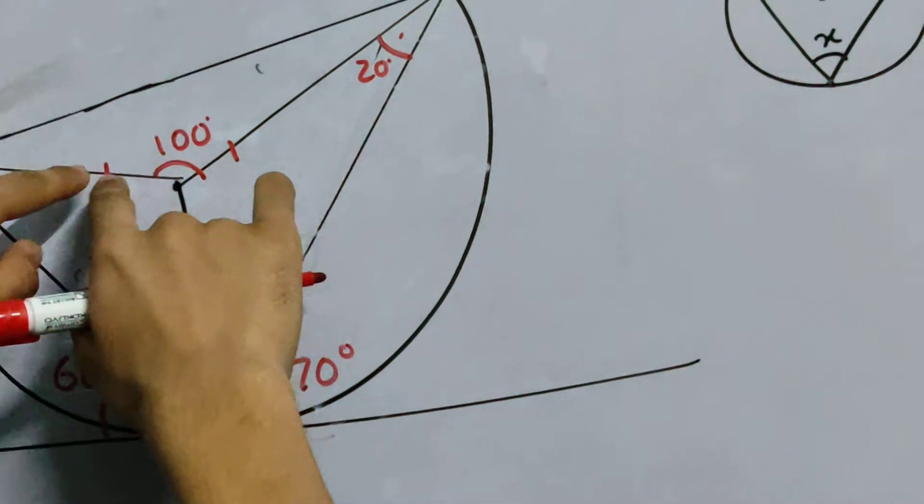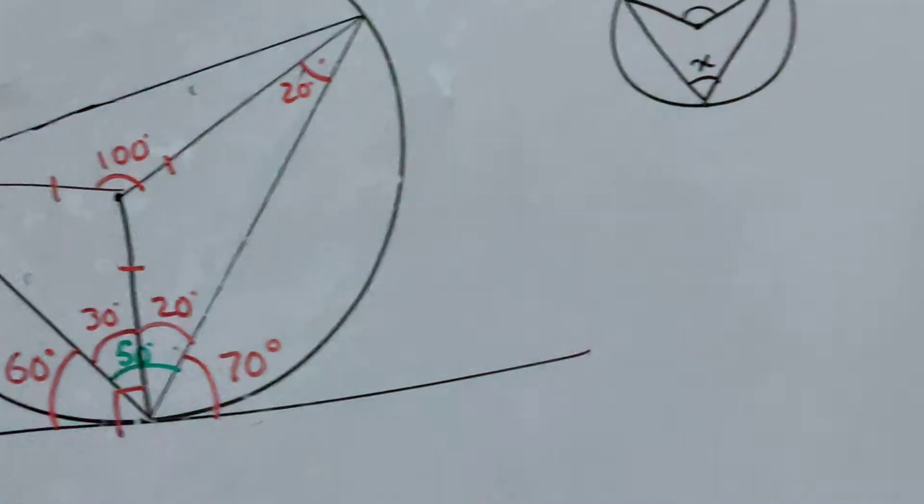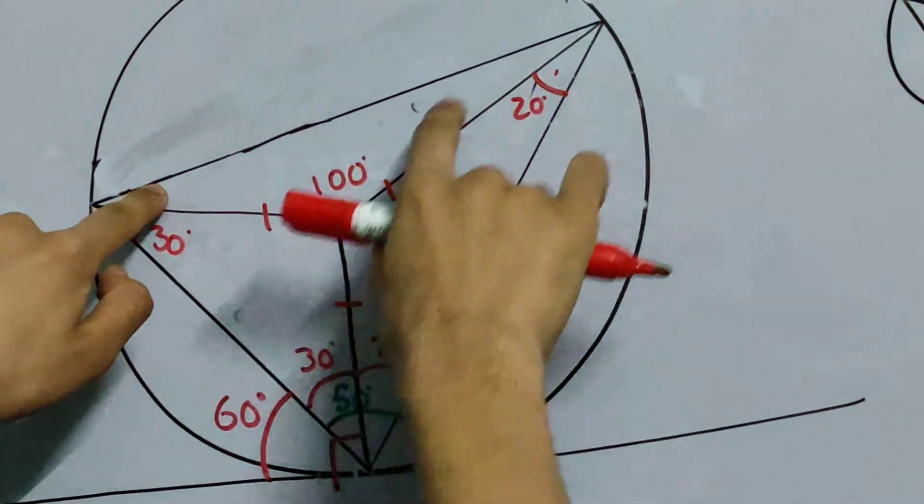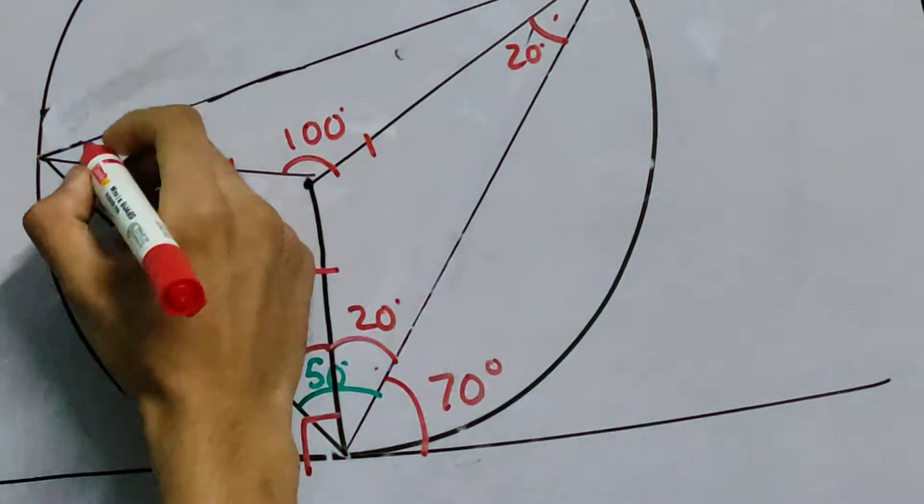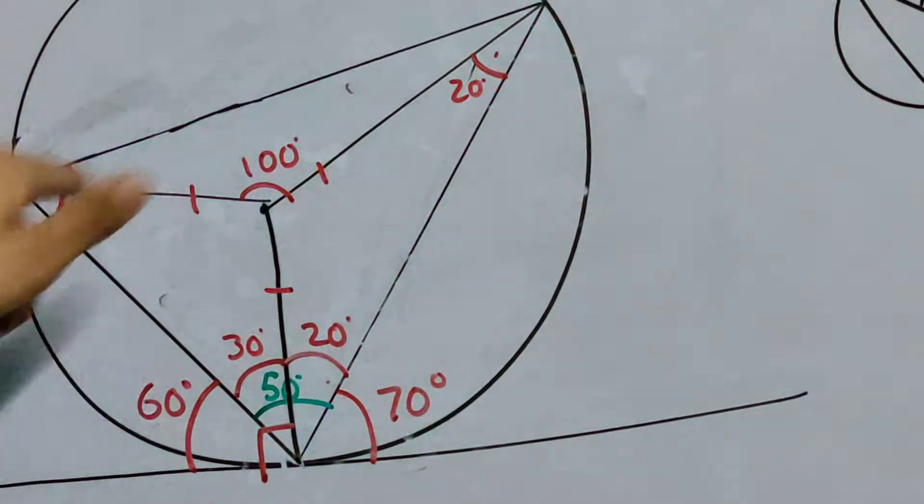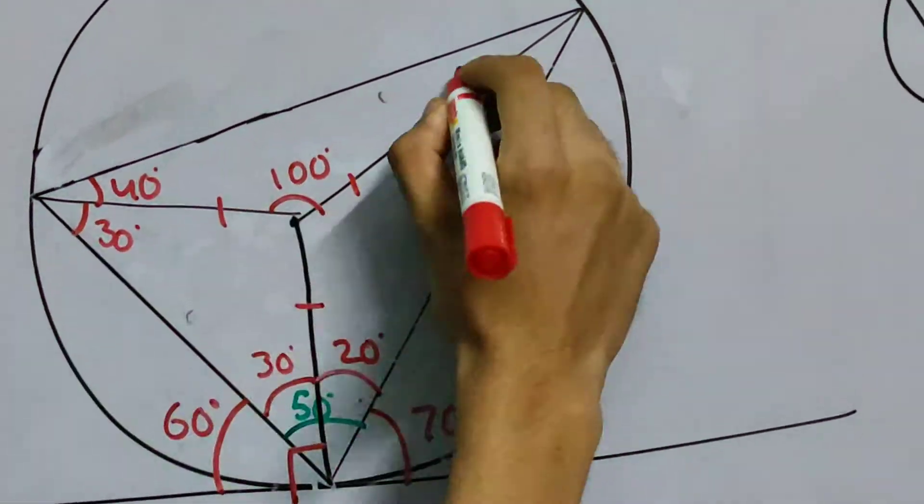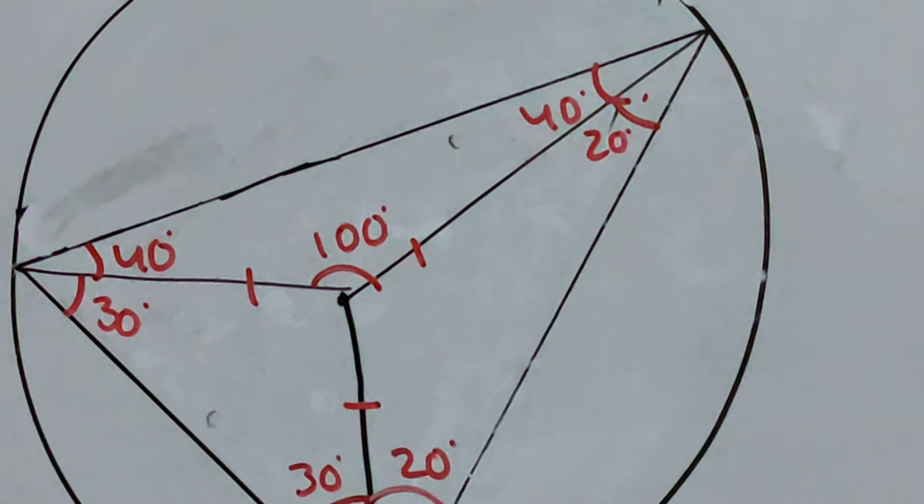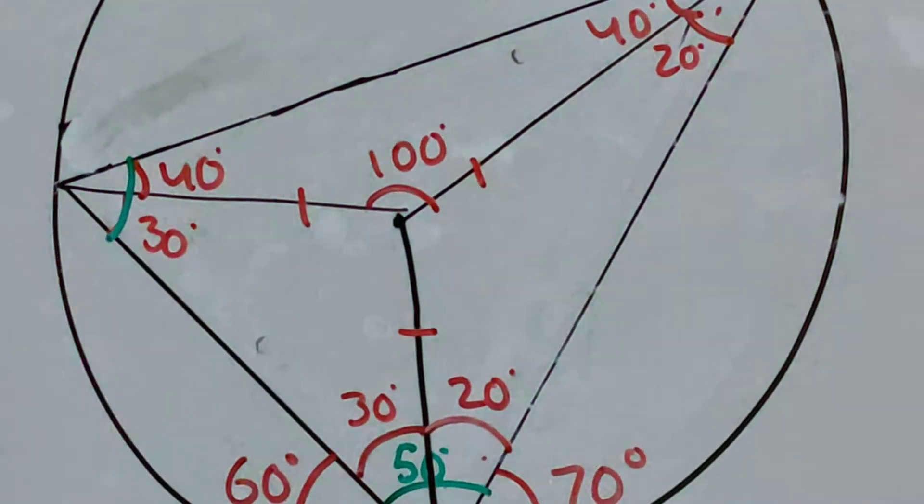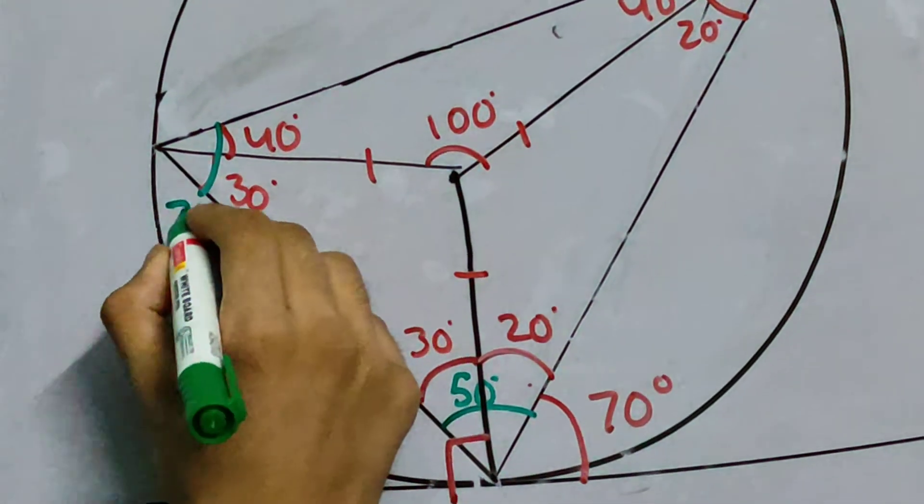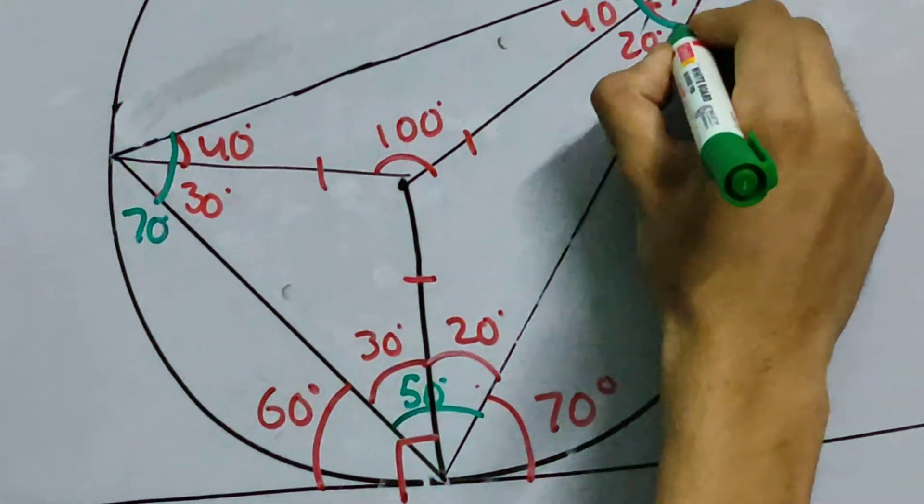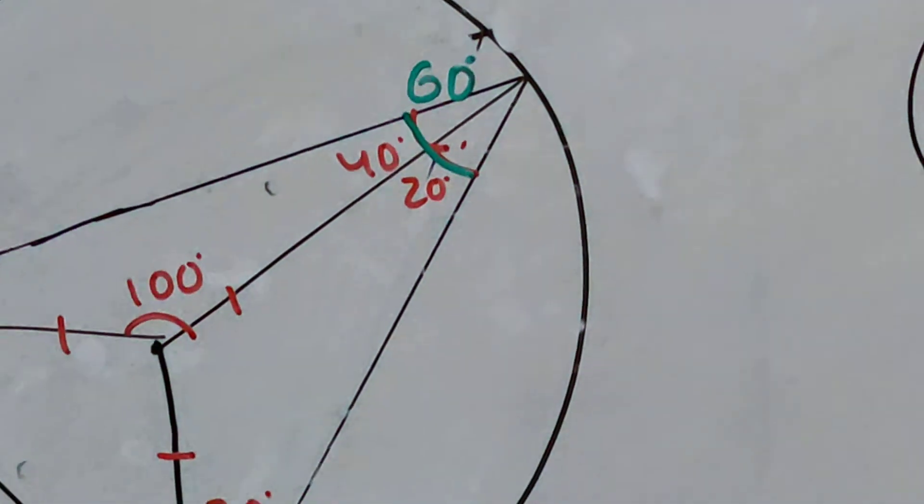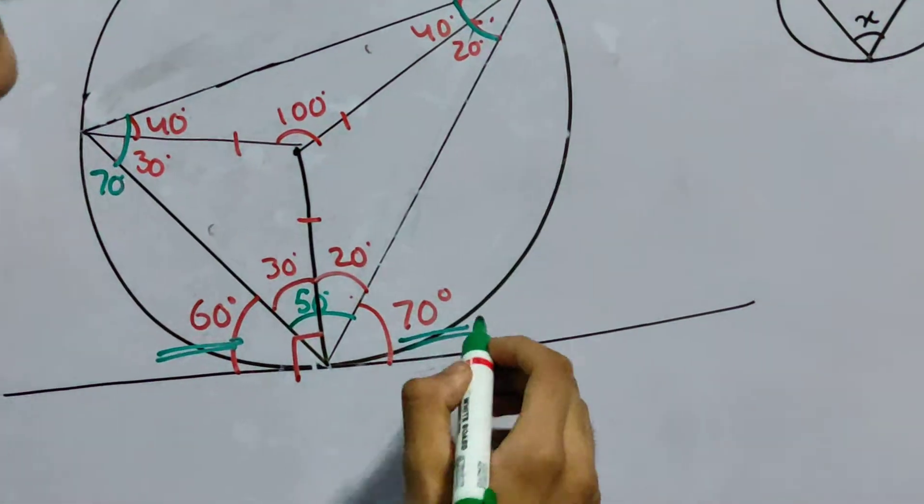Again, look at this triangle. This triangle is also an isosceles triangle. You see, these two sides being equal, so these two angles will also be equal. And this will be, you can work this out, 40 degrees. This will also be 40 degrees. And now we are done. This angle, this entire stuff is 70 degrees, and this one is 60 degrees. 60 degrees. 70 degrees.